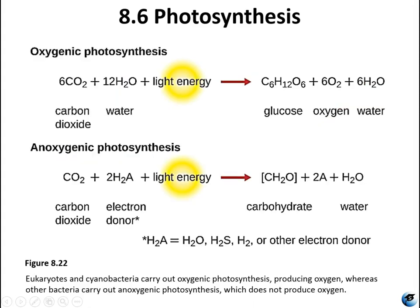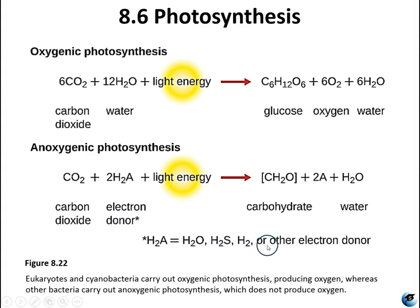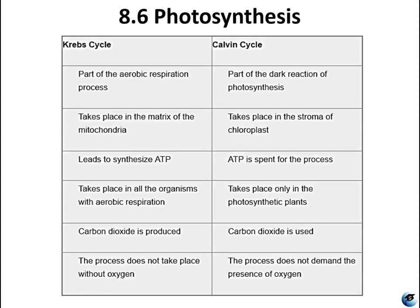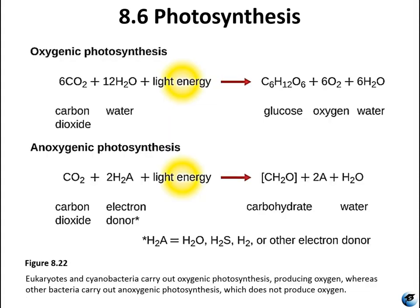This figure compares oxygenic and anoxygenic photosynthesis. Oxygenic photosynthesis is performed by eukaryotes and cyanobacteria, using water as the electron donor, producing oxygen and glucose. Anoxygenic photosynthesis is generally performed by prokaryotic bacteria using electron donors other than water — such as hydrogen sulfide or straight hydrogen — and does not produce oxygen.